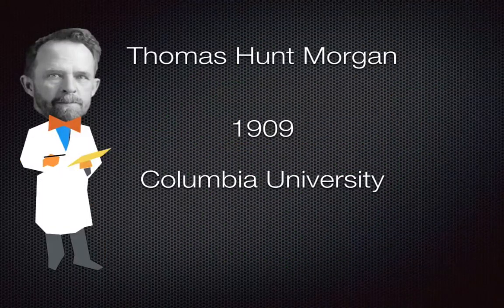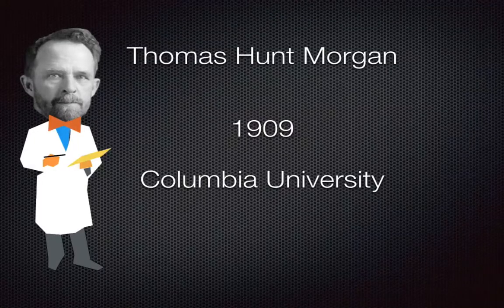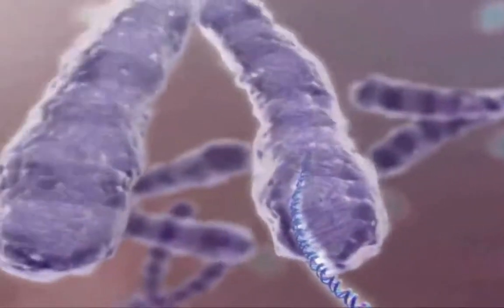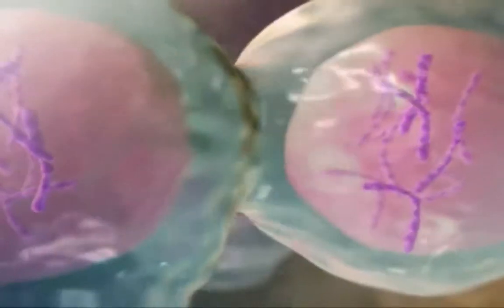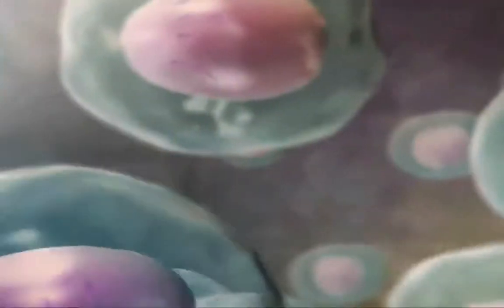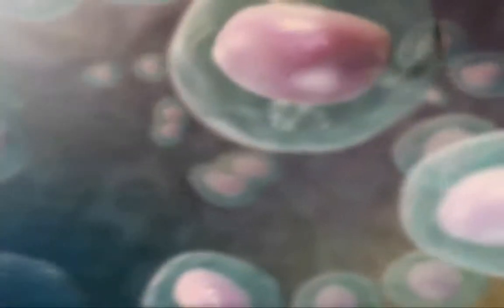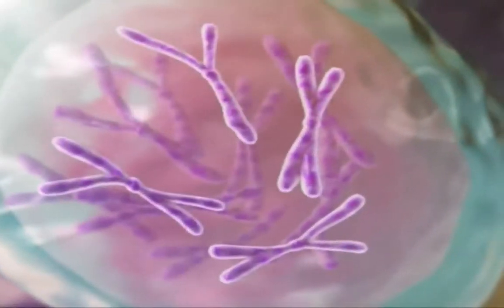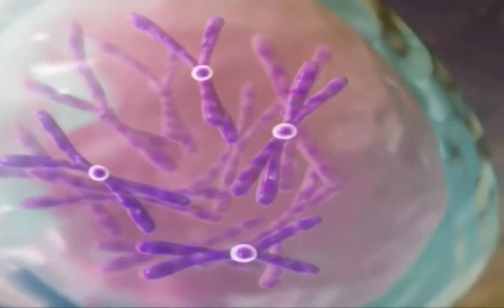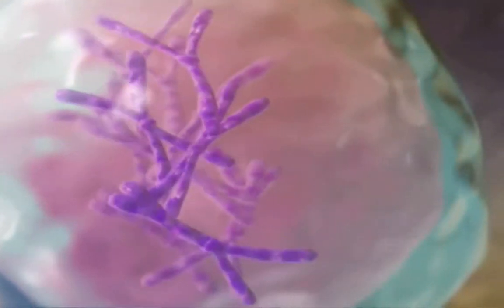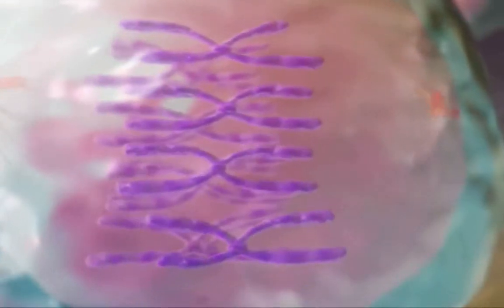That question got the attention of Thomas Hunt Morgan in 1909 at Columbia University. Thomas Hunt Morgan noticed something very interesting when he studied the cell. As he was looking inside a cell, he noticed some very definitive features in the nucleus. He noticed that as the cell was dividing, there were X-shaped features that he would later call chromosomes, because when he gave them a color dye, they came out very bright — they were very chromatic.